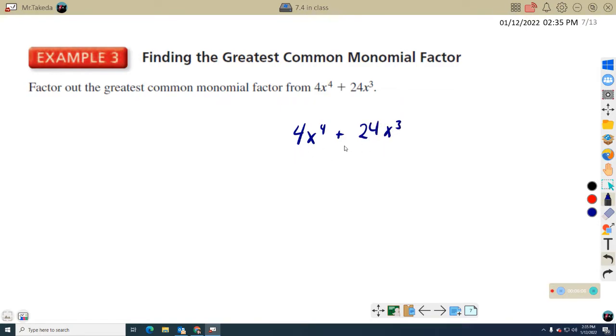So you're looking for the common factors between four X to the fourth and 24 X to the third. Let's break this down here. So I have four and 24. So I know four, I can think of, I can think of 24 is four times six, right?